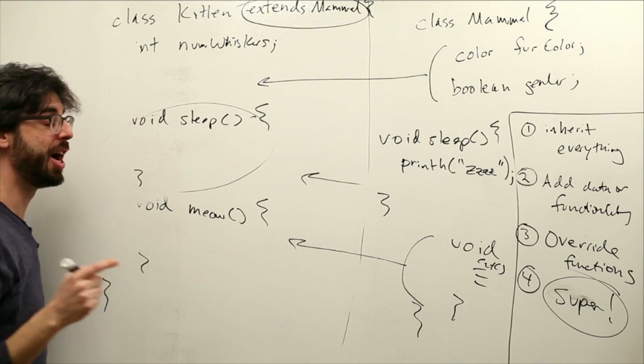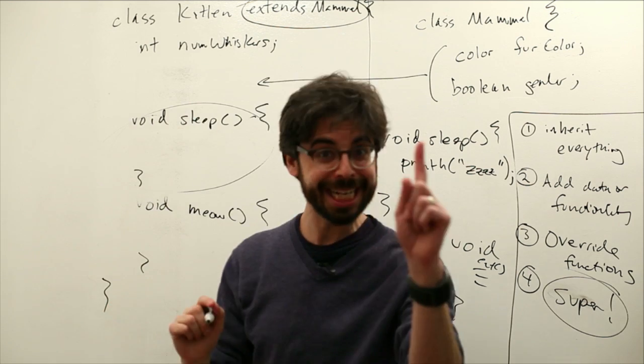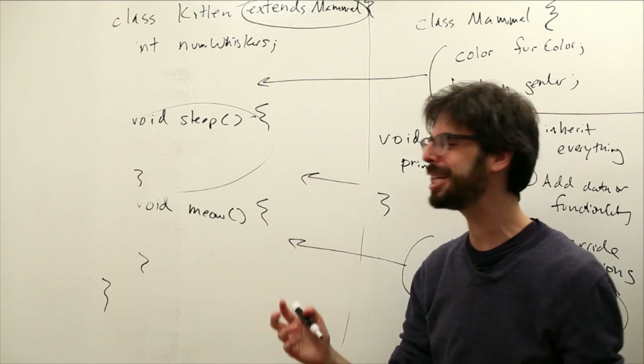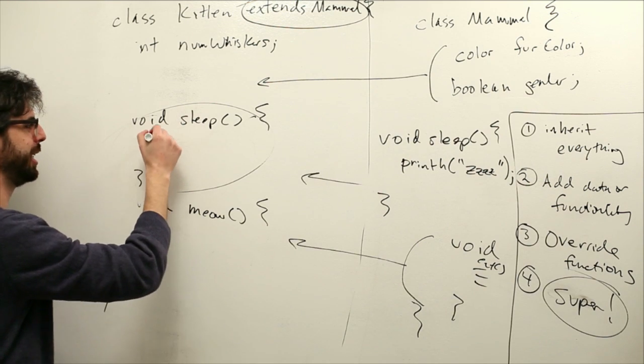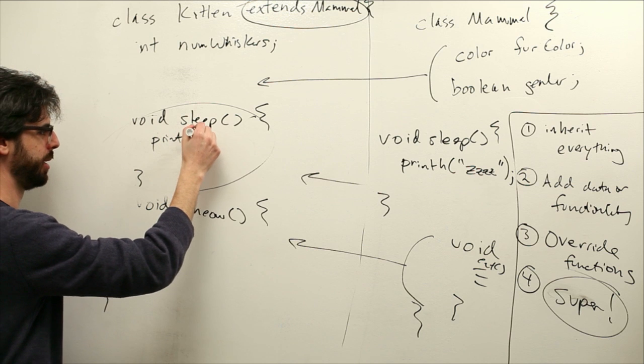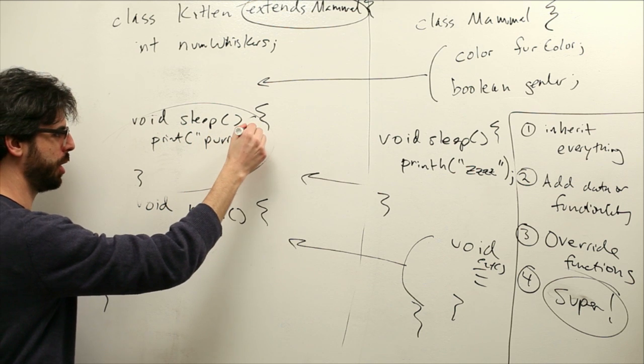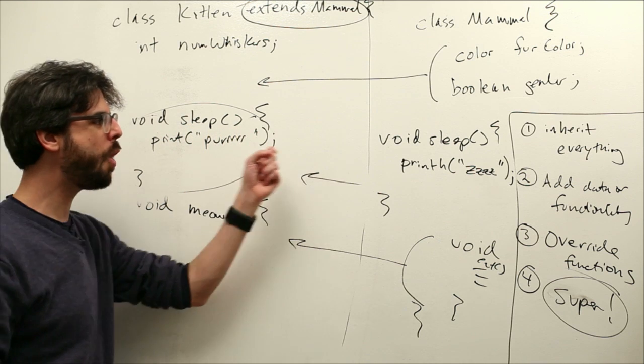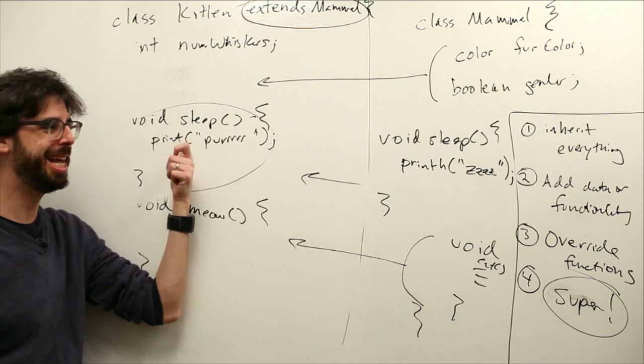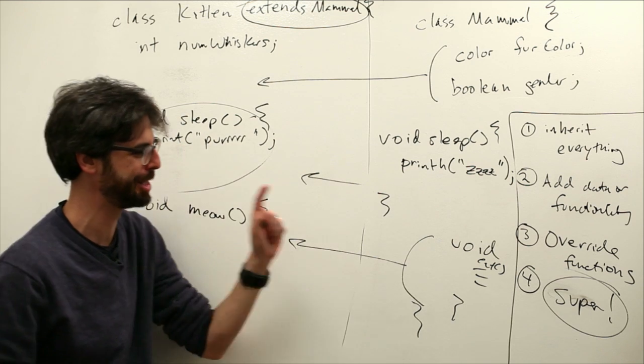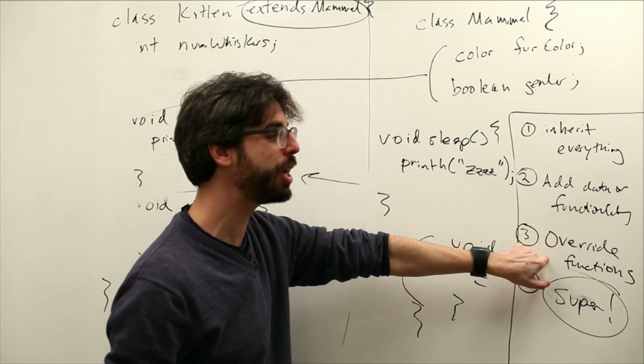Now, I'm going to override it. And I'm going to say sleep. A kitten does not zzzz when it sleeps. What a kitten does is it says purr. Okay, so this is overriding. Mammals zzzz, kittens purr. So this is number three, overriding.